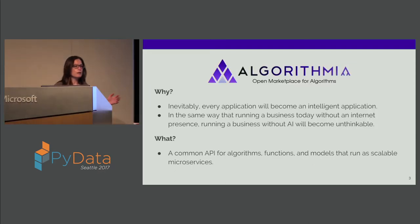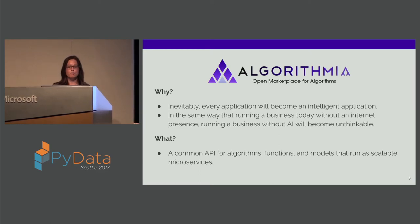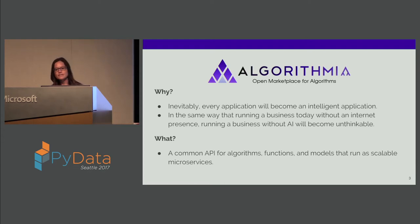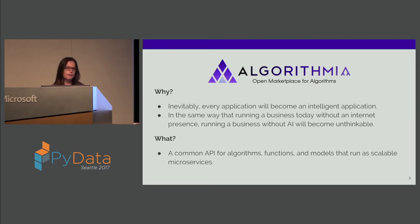At Algorithmia, we're a common API for algorithms, functions, and models that run as scalable microservices. We're powered by a great community of developers, researchers, and organizations that contribute to the platform to make the marketplace robust and have state-of-the-art algorithms accessible and discoverable by everyone. Think of this as the bridge between researchers who create the algorithms and developers who want to consume them. We have more than 2,500 algorithms that run as containerized microservices — like Lego building blocks of algorithmic intelligence that developers can create, share, and remix at scale.